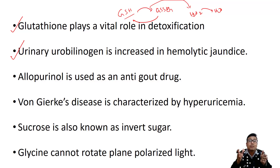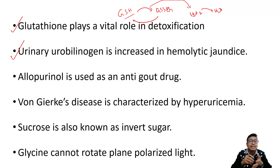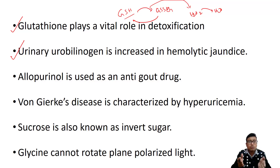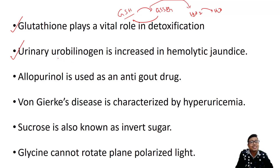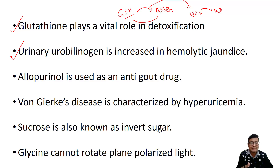That urobilinogen is excreted in urine, so in hemolytic jaundice the urine will be very dark colored — it may look like blood but it is actually urobilinogen. In hemolytic jaundice there is excess unconjugated bilirubin in blood, so urobilinogen production is very high and urinary urobilinogen is markedly increased. Importantly, there is no bilirubinuria in hemolytic jaundice because unconjugated bilirubin is not soluble in urine; it reaches the gut where urobilinogen is formed, reabsorbed, and then excreted in urine.